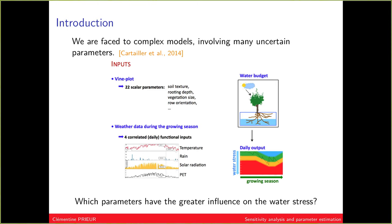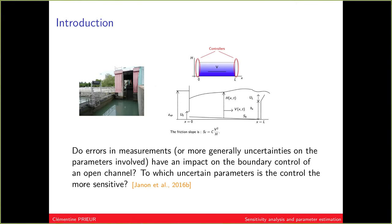But also in such applications, you have important inputs which are weather data — temporal and spatio-temporal inputs such as temperature over time at different places, rain, solar radiation, and PET. One question was: which parameters have a large influence on the water stress? Because water stress is what people producing wine want to control.